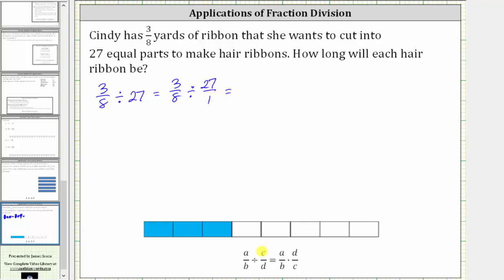From here, dividing by a fraction is equivalent to multiplying by the reciprocal. The reciprocal of 27/1 is 1/27, which means 3/8 divided by 27/1 is equivalent to 3/8 times 1/27.